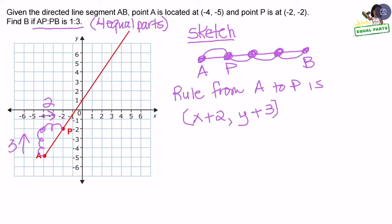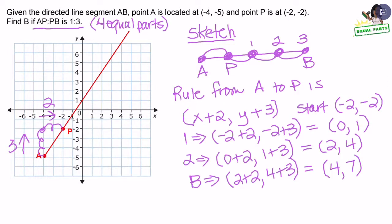If I keep with that same rule, I will eventually get to point B. I know that my starting point is going to be at point P, which is negative 2, negative 2. And from there, I'm going to just add on to the X and to the Y to get the additional three points. So the answer for point B or the ordered pair for point B is going to be at 4 and 7.